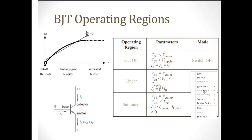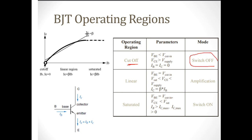In BJT, there are three operating regions. The first is the cutoff region — when you switch off the transistor by applying VBE less than 0.7 V, or when VCE is higher than the supply voltage. In cutoff, all currents (base current and collector current) are cut off. This is the off-state of the transistor.